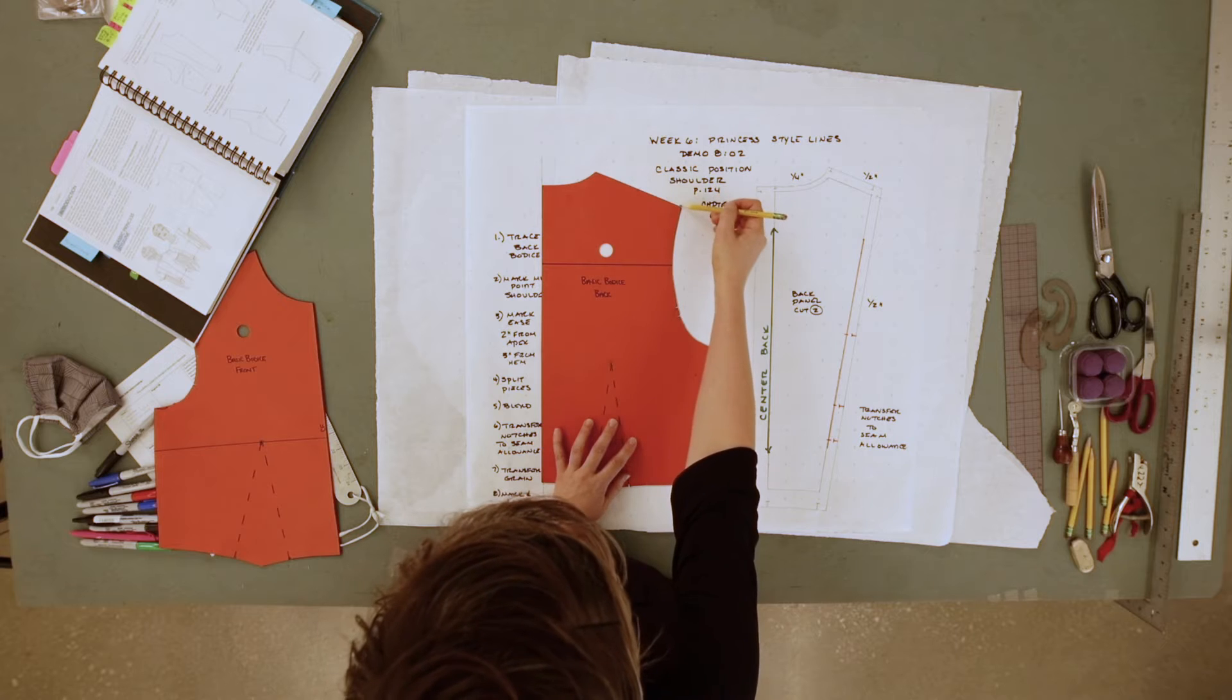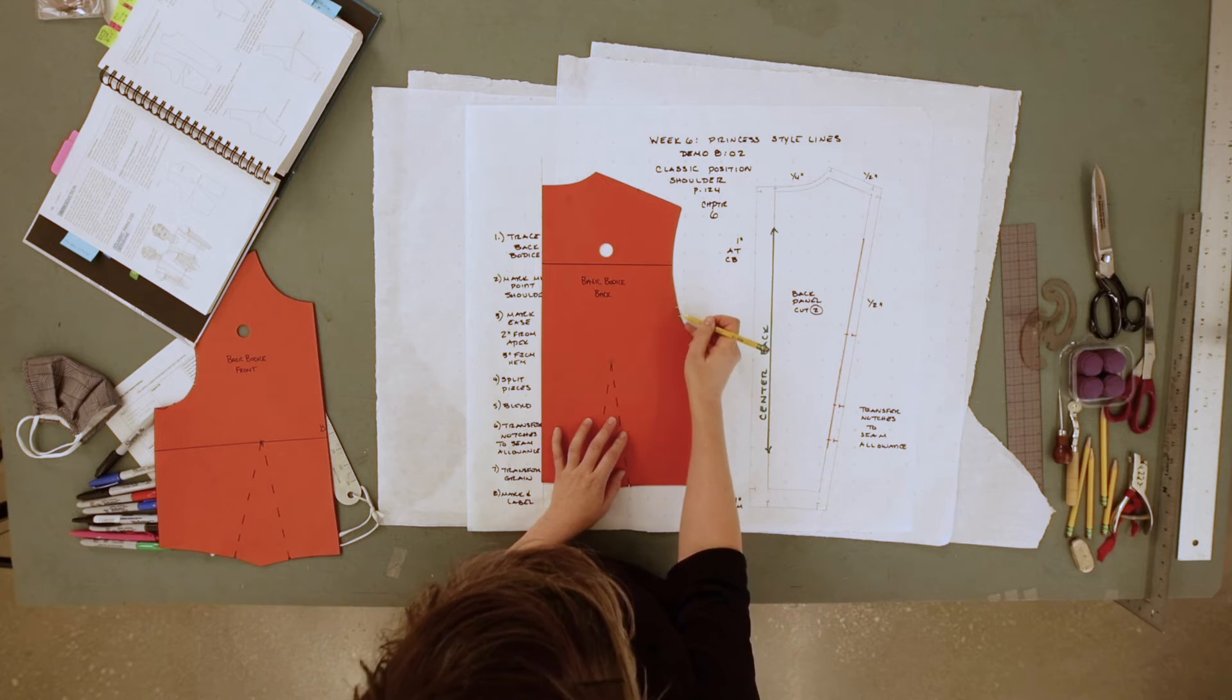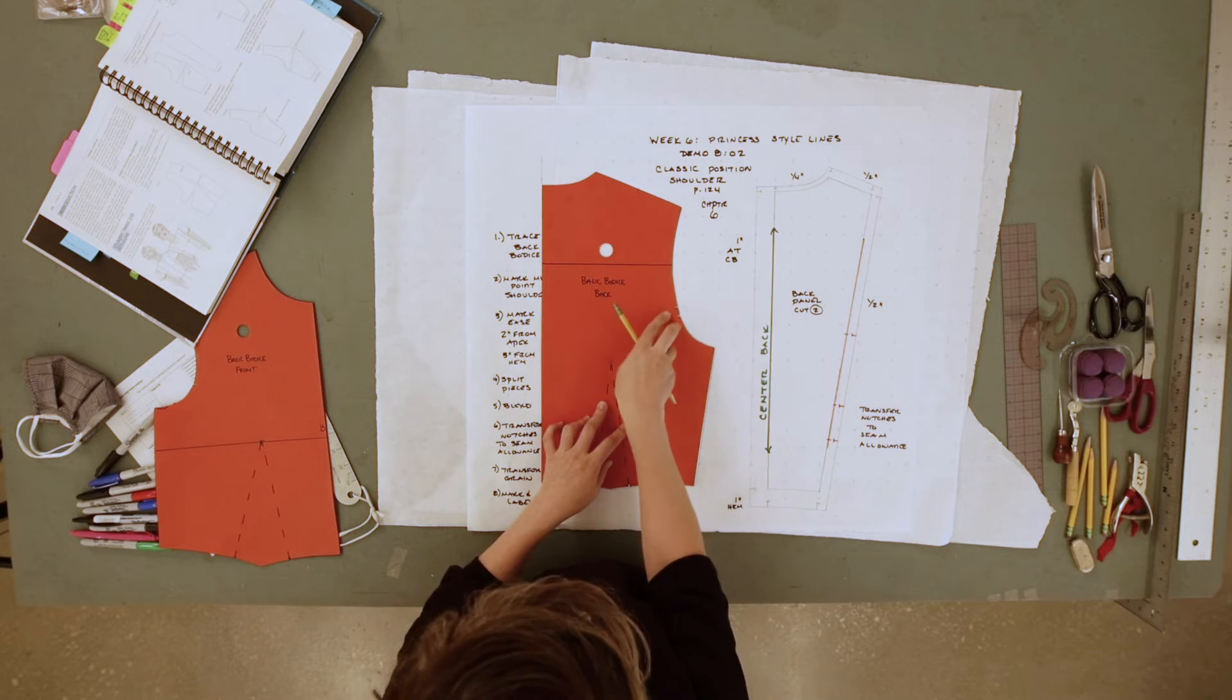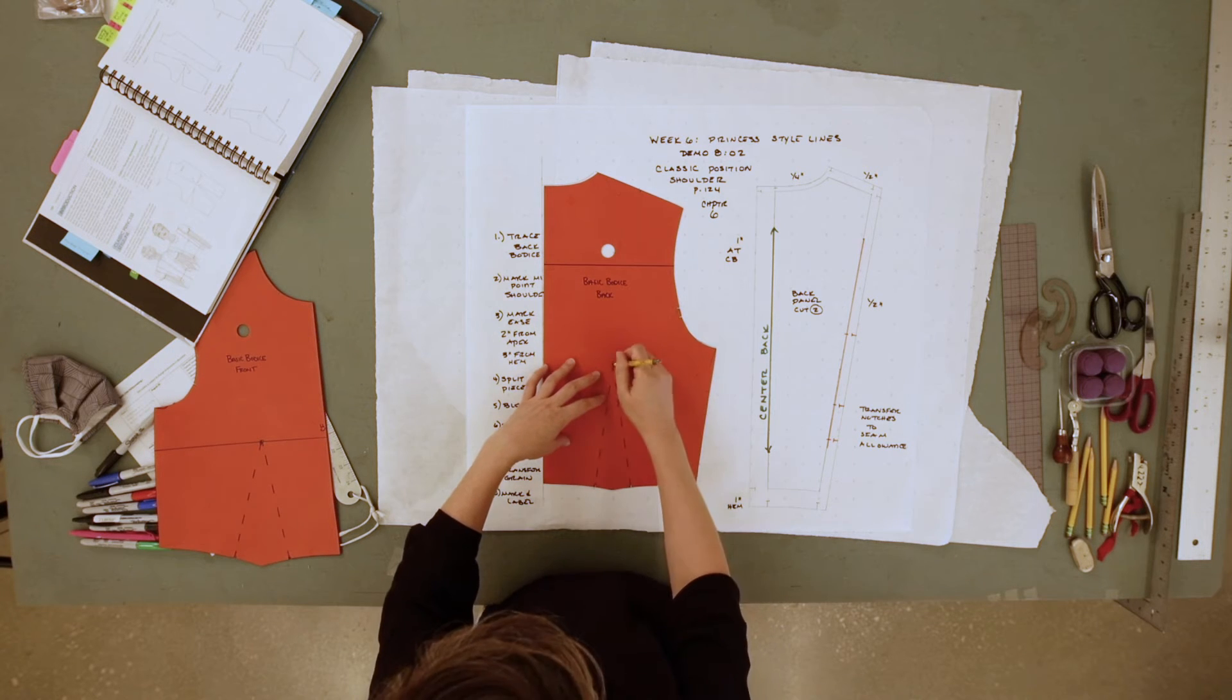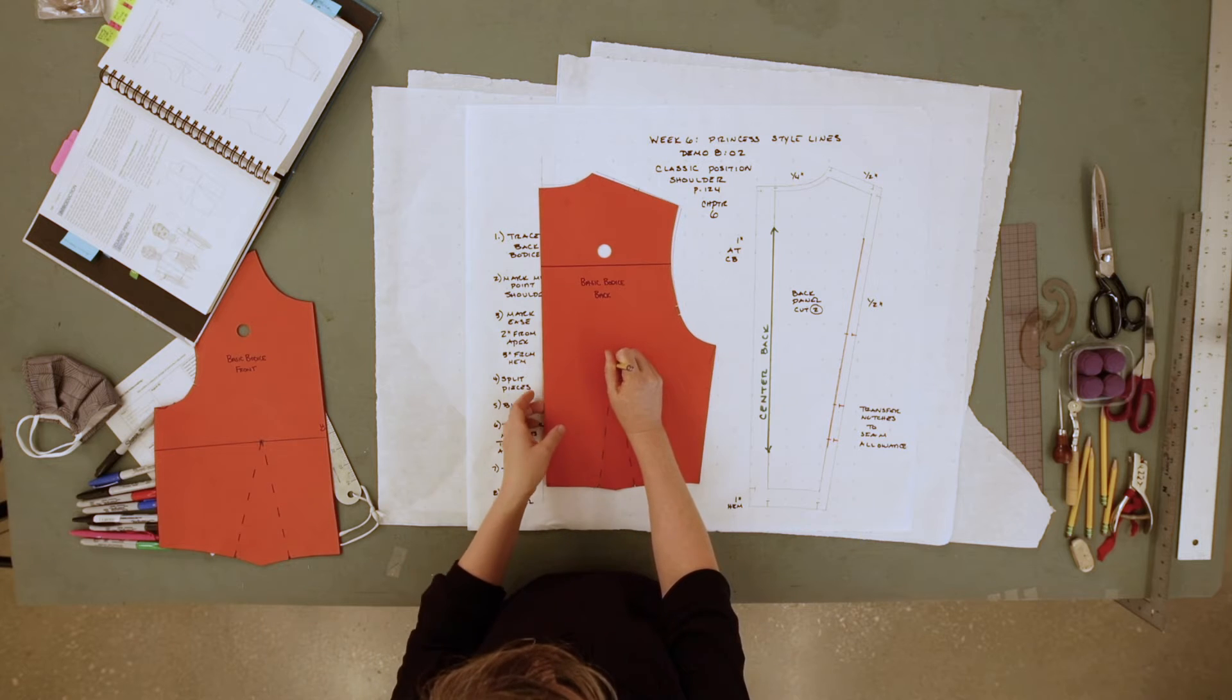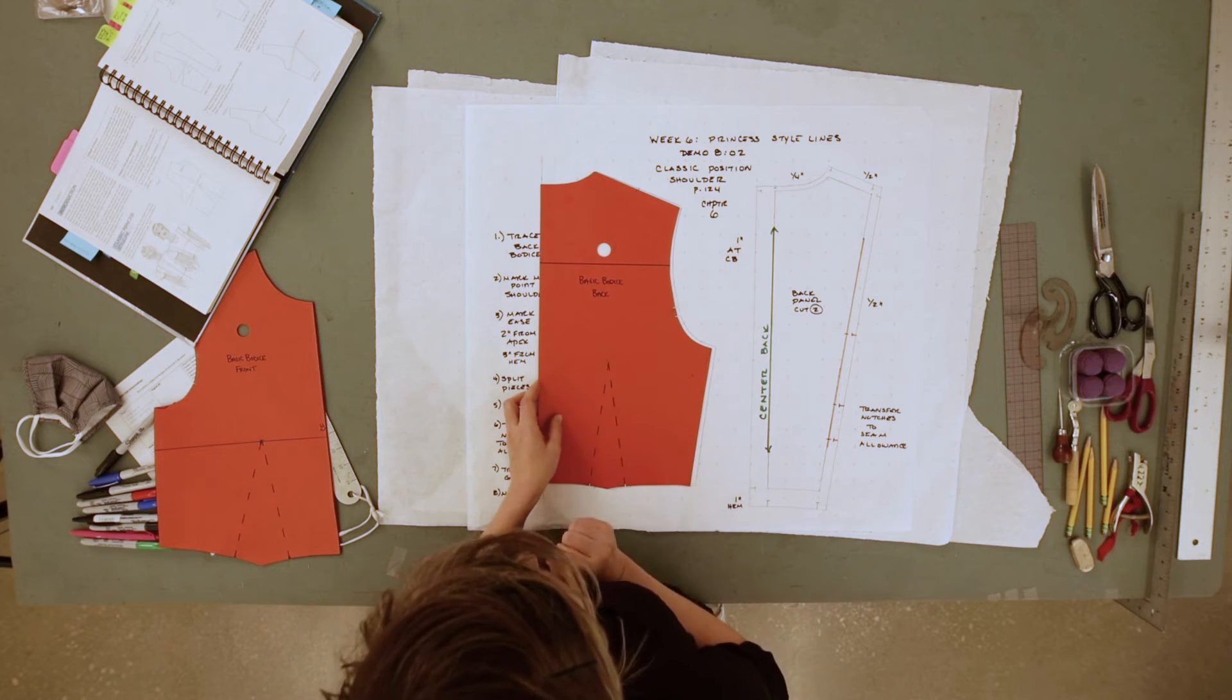Neckline, shoulder, armhole, armhole notches. Remember there are two on the back side seam and waist dart. Make sure you mark your apex and where your style line is going to be.